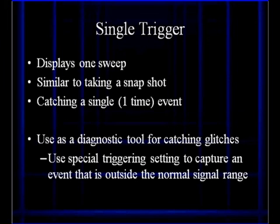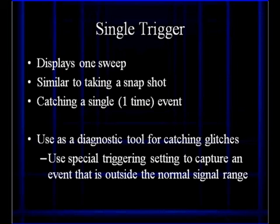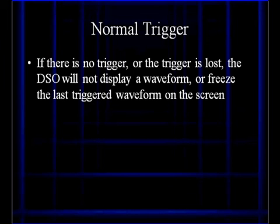A single trigger is a very specialized situation where it displays one sweep — it's like taking a snapshot. It's for catching a one-time event and is used as a diagnostic tool for catching glitches, using specialized triggering settings to capture an event that is outside the normal range. So if you have a voltage going way too high on rare occasions, set your triggering higher than normal. If it's going much lower than normal, set negative slope with a trigger below your normal signal, and it will capture that one instant for you. With normal trigger, if the trigger is lost, the DSO will not display the waveform or will freeze the last triggered waveform.